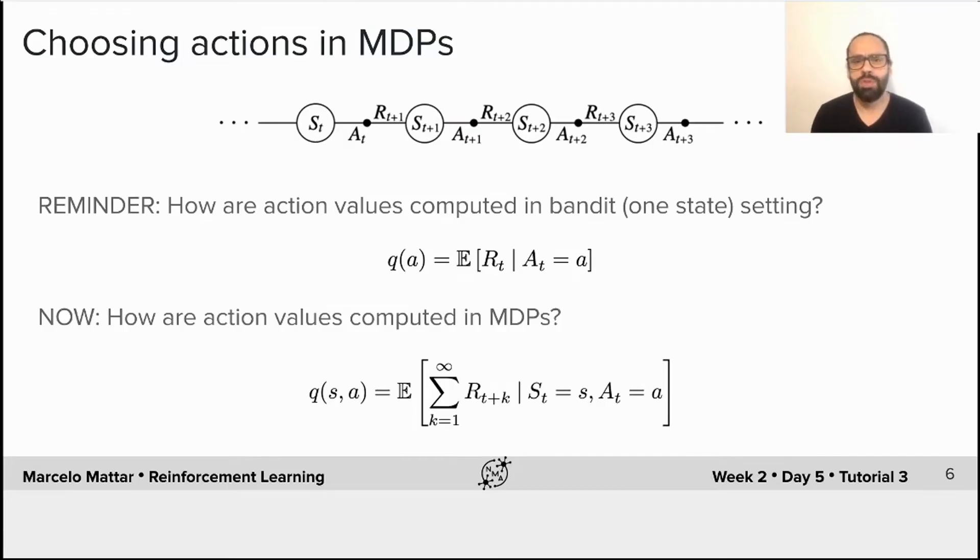Now in MDPs, we want to do something similar. But since an action has the potential to change the state of the world, it's not a good idea anymore to consider only the immediate reward. This would be a bad idea, for example, if the agent chose an action that leads to a high reward in the moment but then leads it to a bad state.